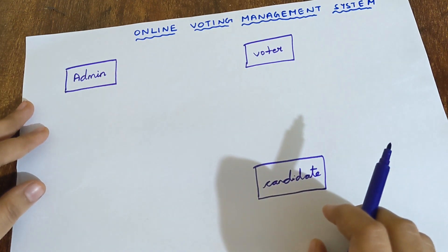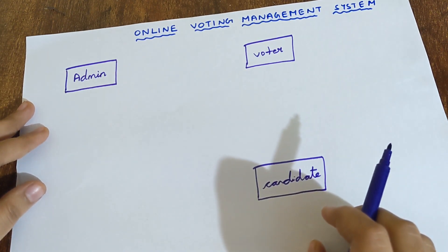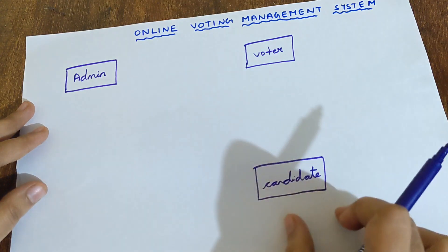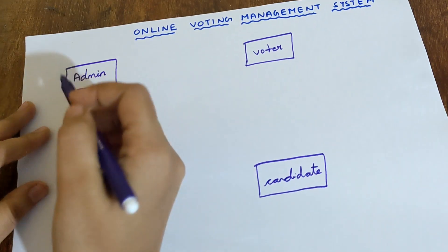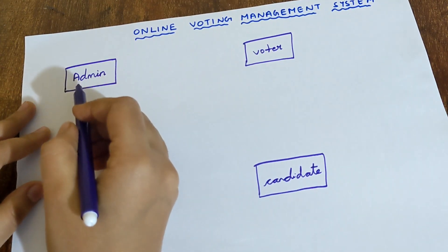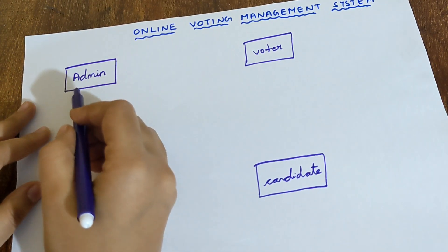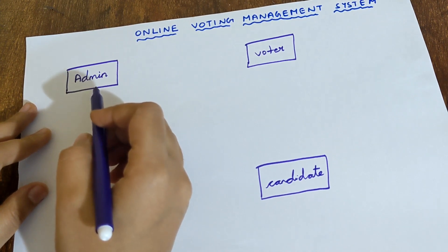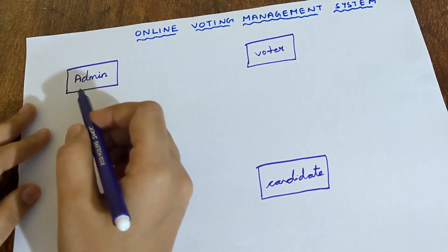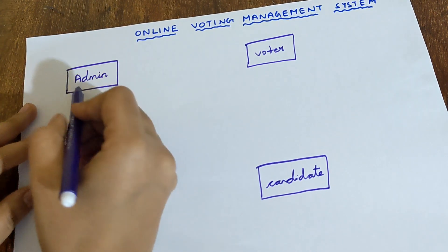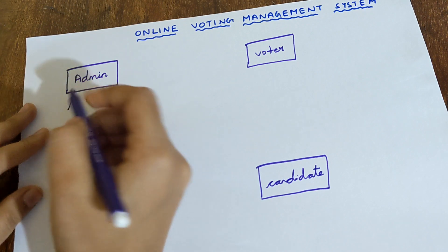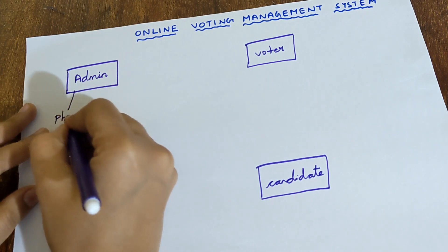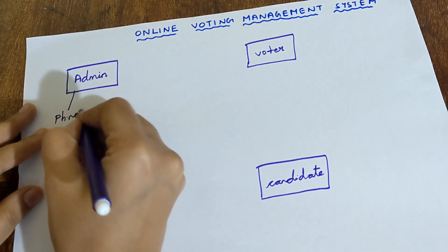The next step is we have to write the corresponding attributes of every single entity. First let us write the attributes of the entity Admin. Attributes must be written inside an oval shape. The first attribute of Admin is phone number.